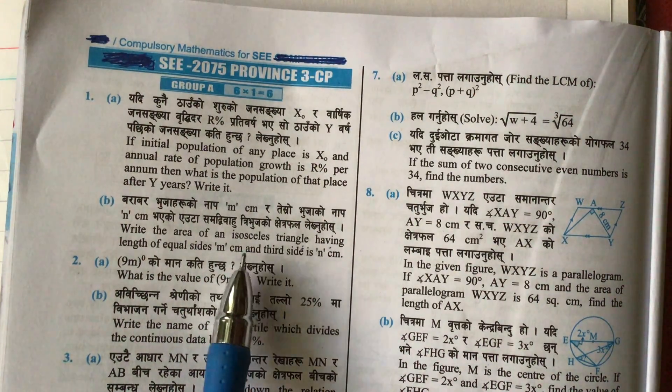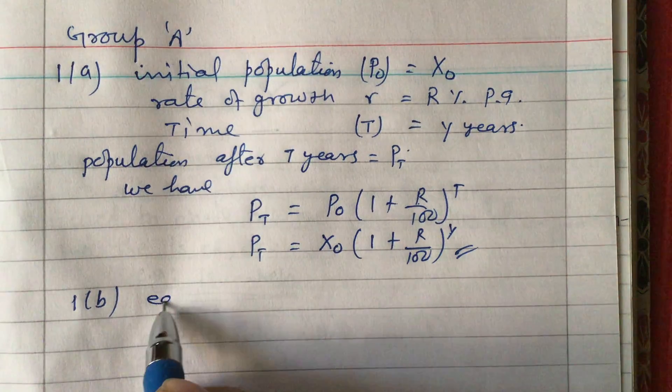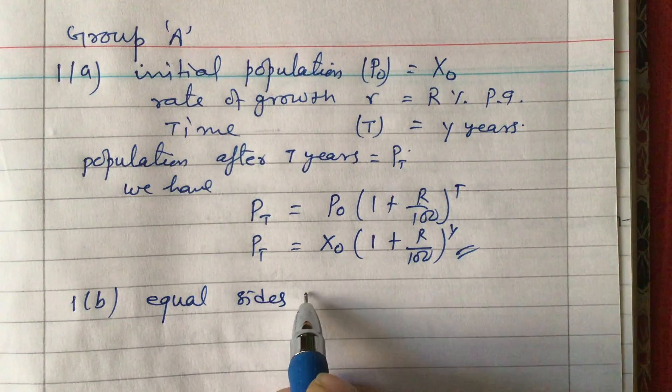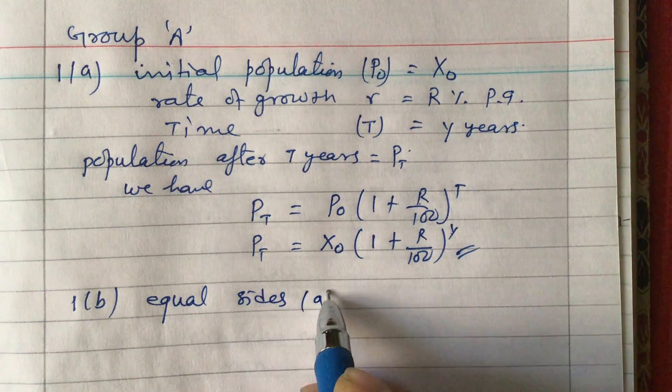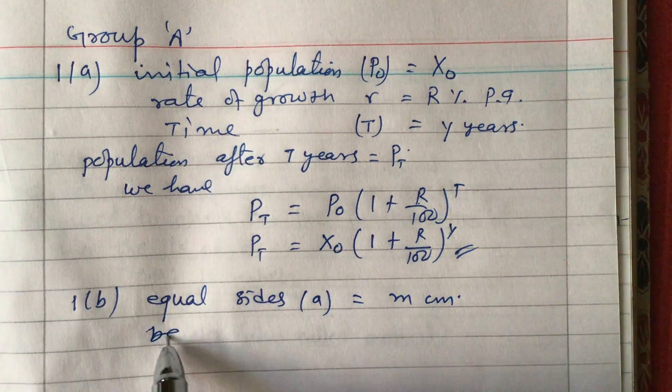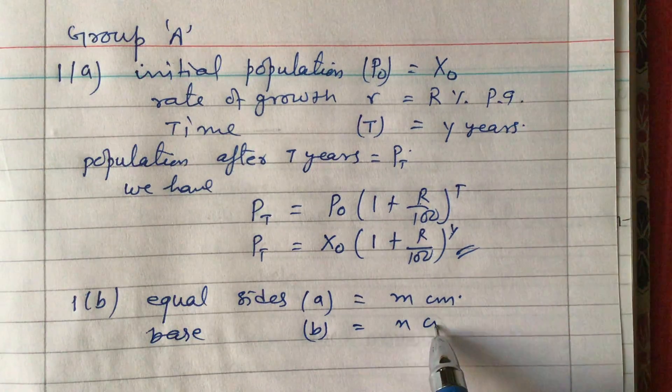Let us write down the given information. Equal sides: a = m centimeters. Base: b = n centimeters.